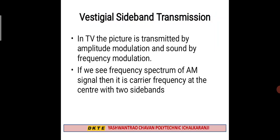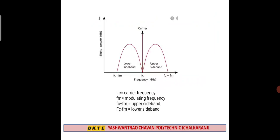When you have an amplitude modulated signal frequency spectrum, there is a carrier frequency and two sidebands. The center is the carrier frequency, with one sideband on each side. Fc plus Fm is the upper sideband and Fc minus Fm is the lower sideband, where Fc is the carrier frequency and Fm is the modulating frequency. This is the frequency spectrum for amplitude modulation.